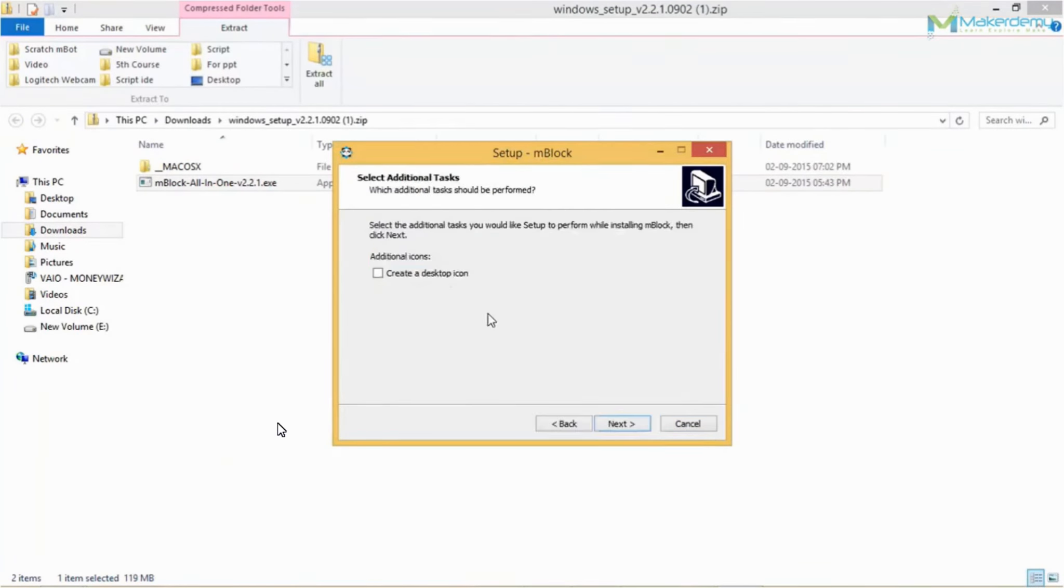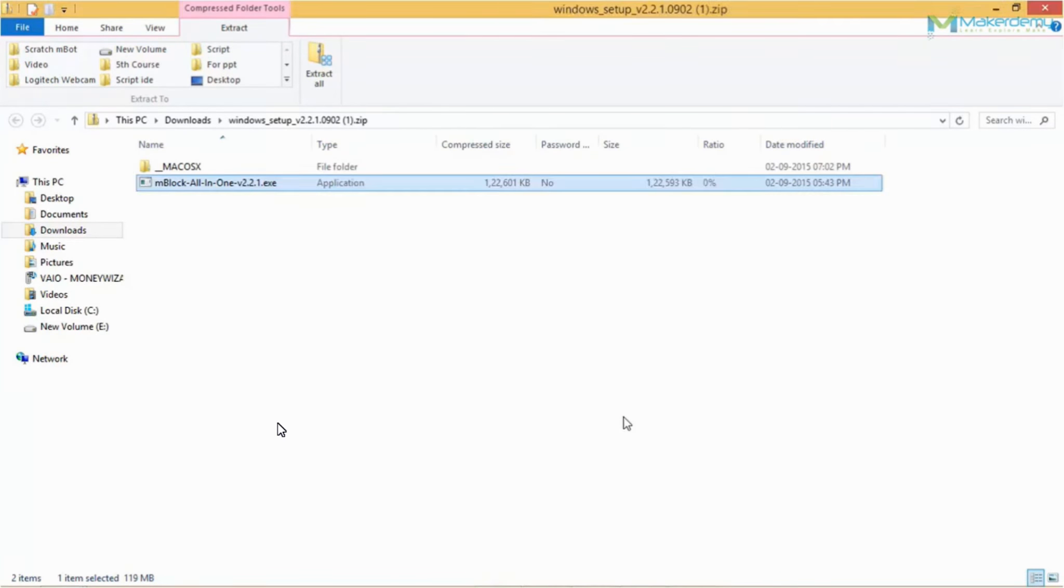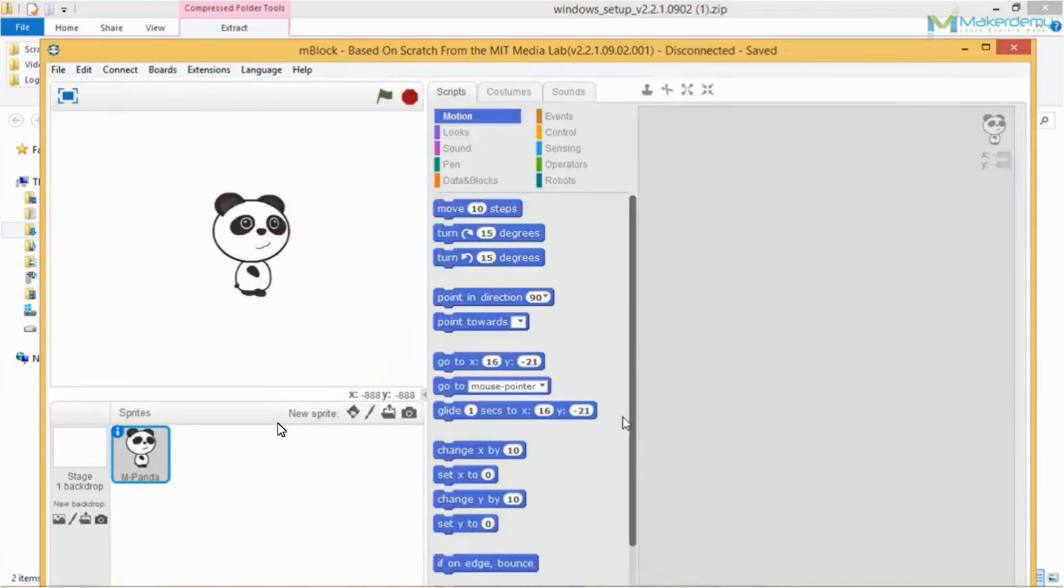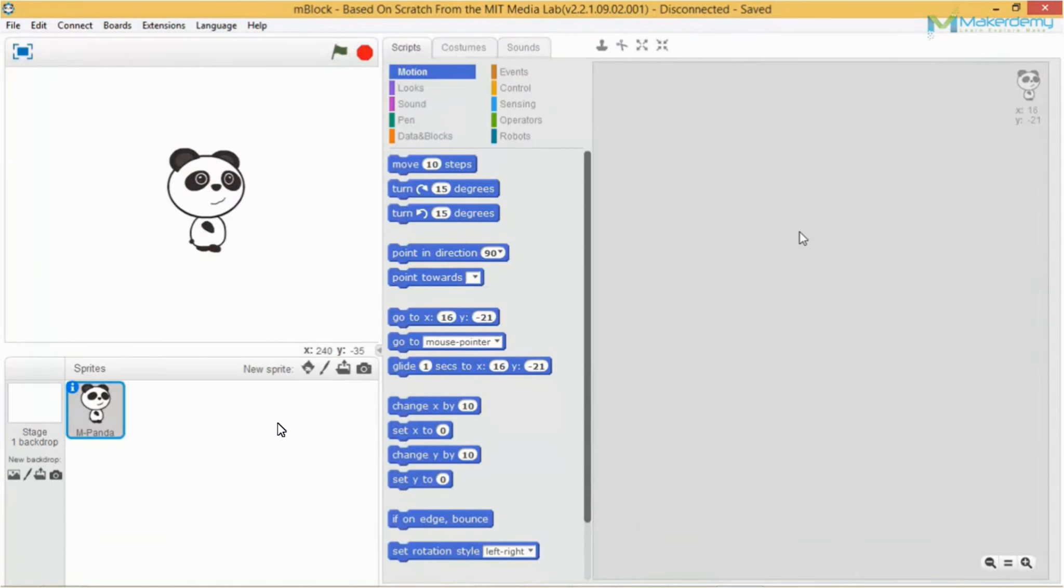Install the software. AMBlock is software developed on the basis of Scratch 2.0. It could control AMCOR mainboard of AMBOT and achieve the corresponding functions.